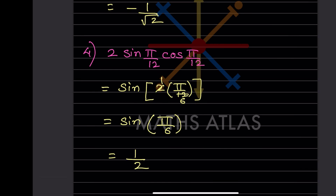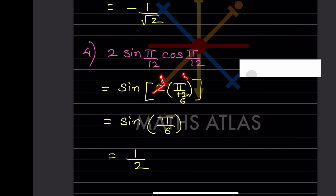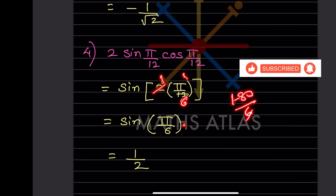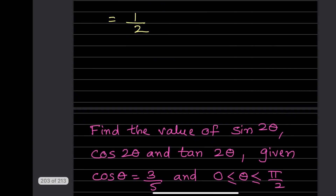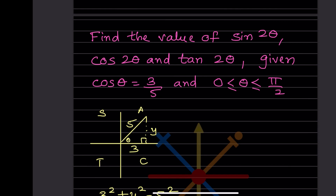Now: 2sin(π/12)cos(π/12) = sin(2·π/12) = sin(π/6). Since π/6 = 30°, and sin30 = 1/2, the answer is 1/2.